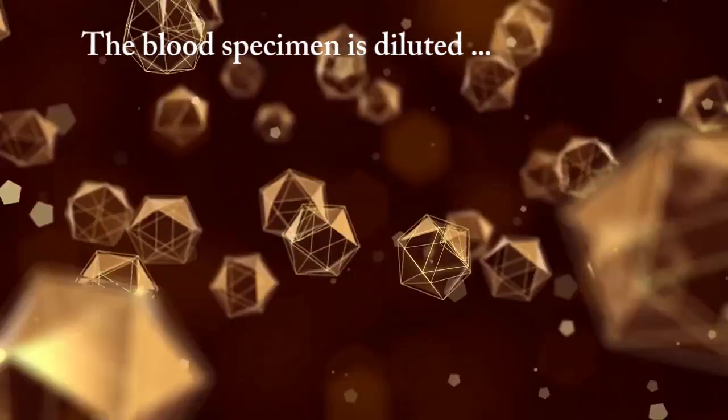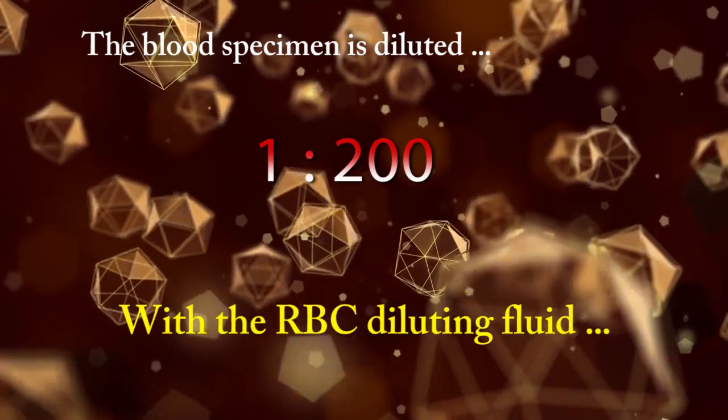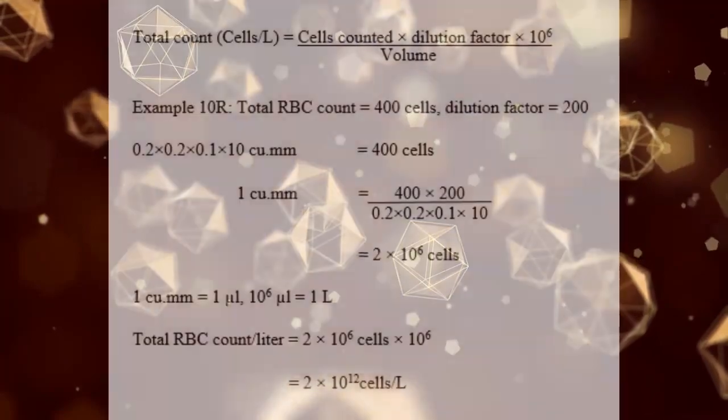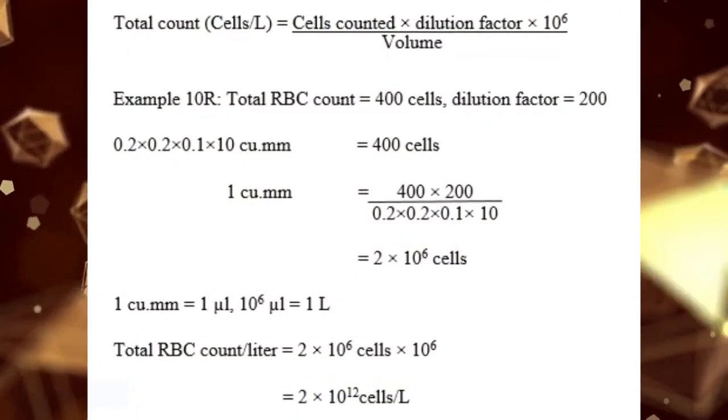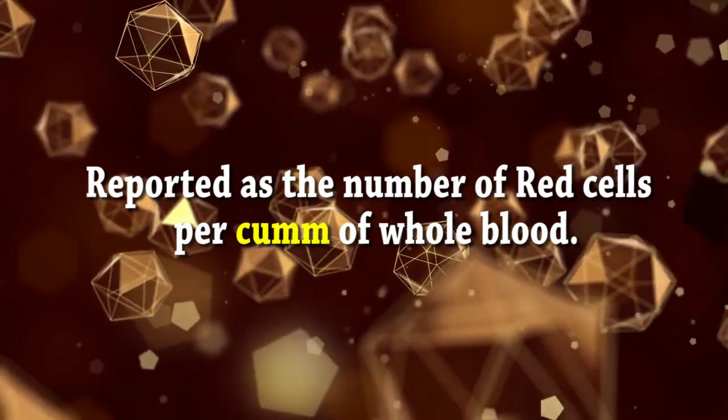The blood specimen is diluted 1 to 200 with the RBC diluting fluid and cells are counted under high power by using a counting chamber. The number of cells in undiluted blood are calculated and reported as the number of red cells per cubic millimeter of whole blood.